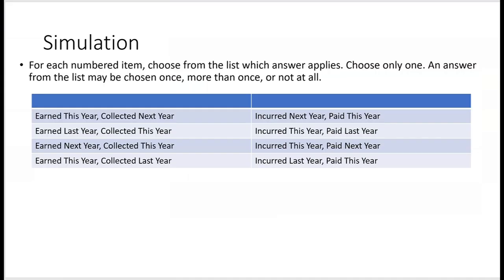For each numbered item, choose from the list which answer applies. Choose only one — an answer from the list may be chosen once, more than once, or not at all. Here's the list: 'Earned this year, collected next year' — what would that be? That would be ending accounts receivable, because the ending balance of accounts receivable represents what was earned this year and collected next year.